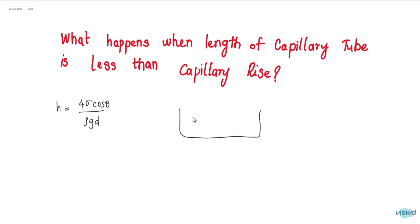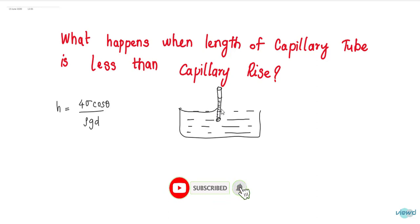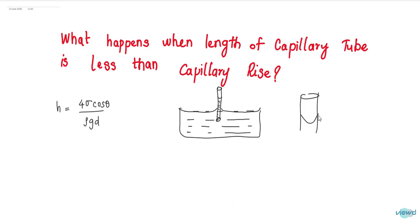If there is some liquid in a container and you have dipped a capillary tube into this liquid, you can see that there is a capillary rise for this liquid. If I zoom in to this tube, this is the surface tension force that is acting, this angle is theta, and this is sigma. Rho is the density, g is the acceleration due to gravity, and d is the diameter. This gives us the capillary rise — how much liquid has been raised in the capillary tube.